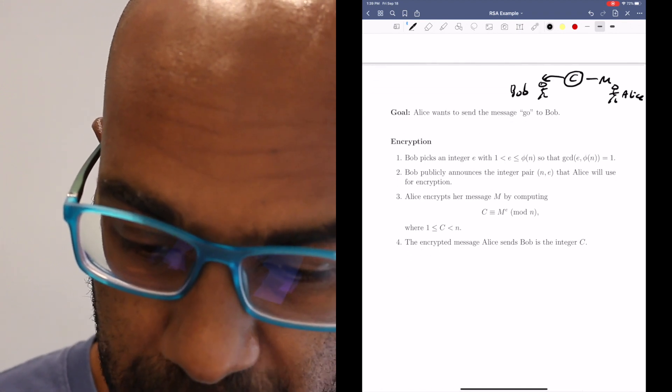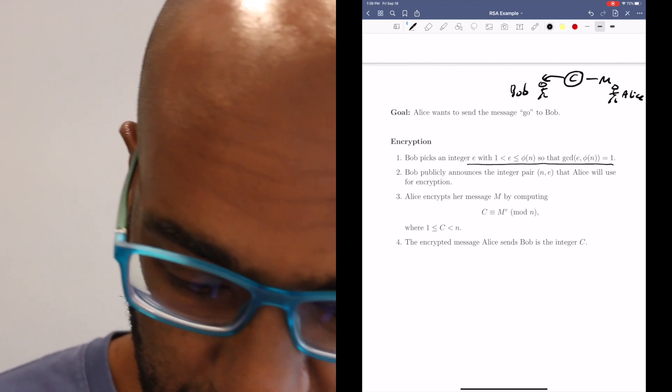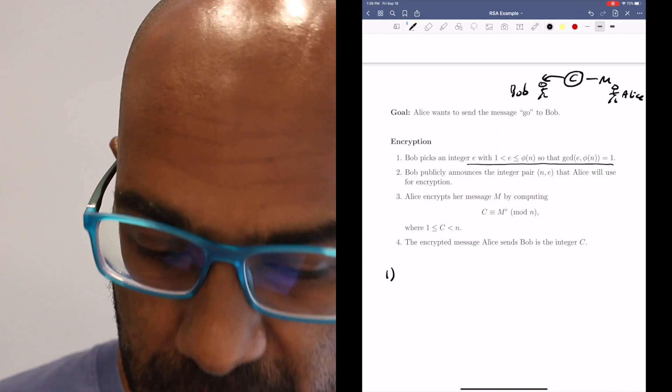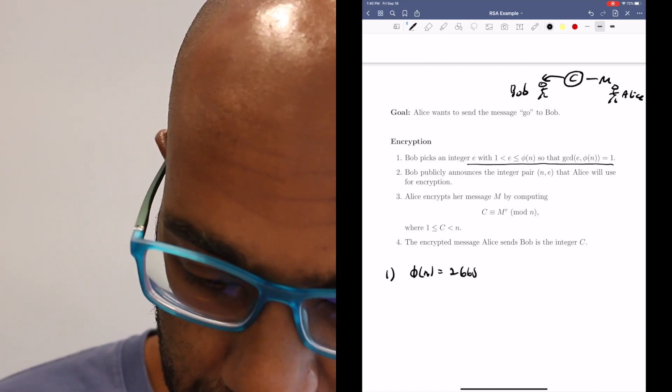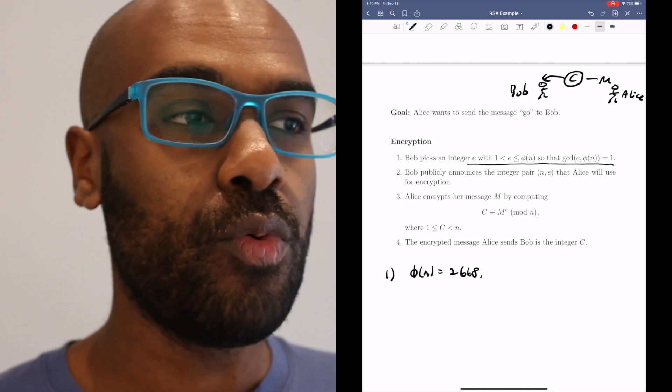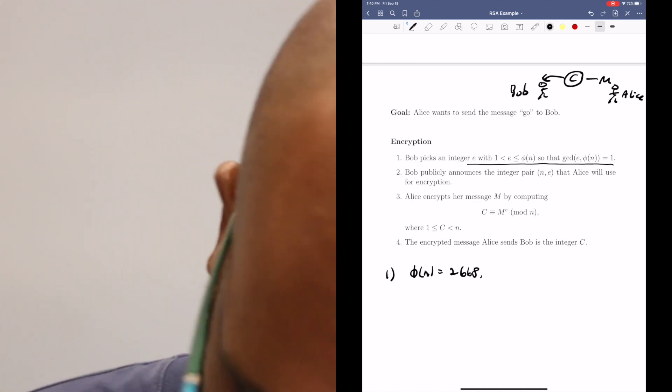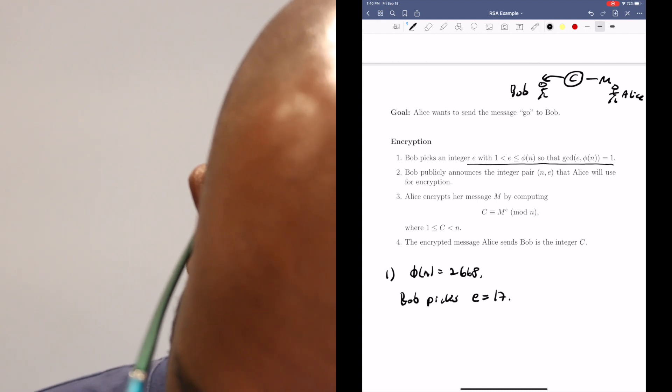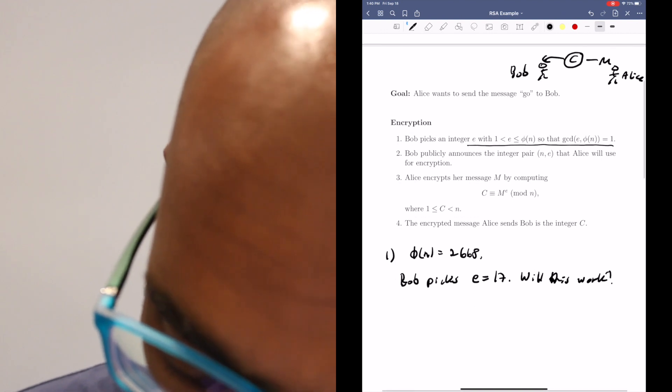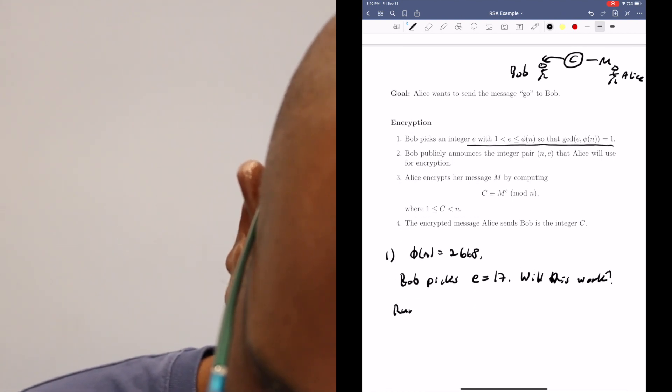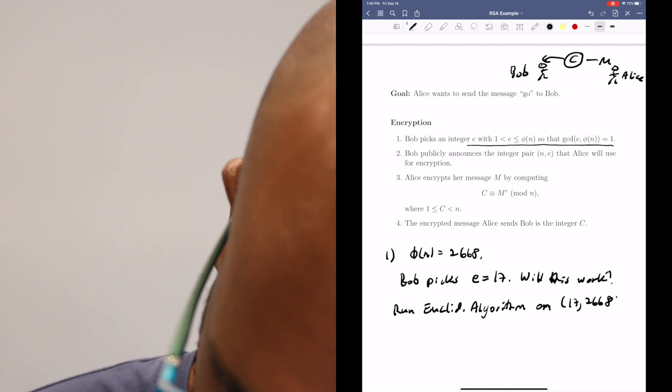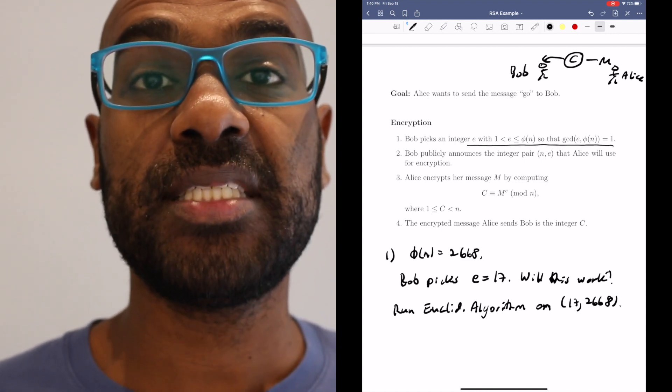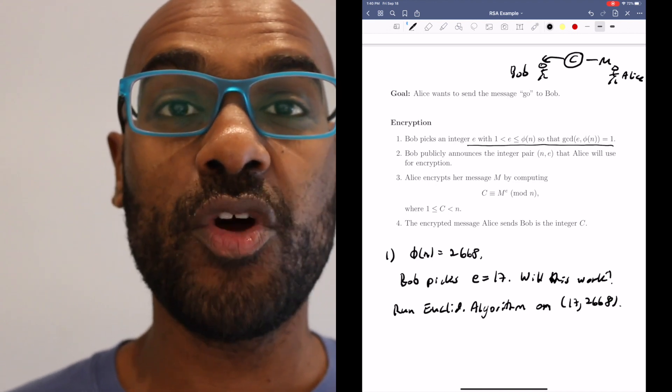The first part is that Bob needs to pick an integer e that satisfies this condition. Bob knows that φ(n) is 2668, so what Bob can do is pick random values for e and test things out. Let's say Bob picks e randomly to be 17. Will this work? We can test using the Euclidean algorithm. Run the Euclidean algorithm on the pair of numbers 17 and 2668. We're not going to illustrate running that process here, but if you want to see how that works, check out this video right over here.